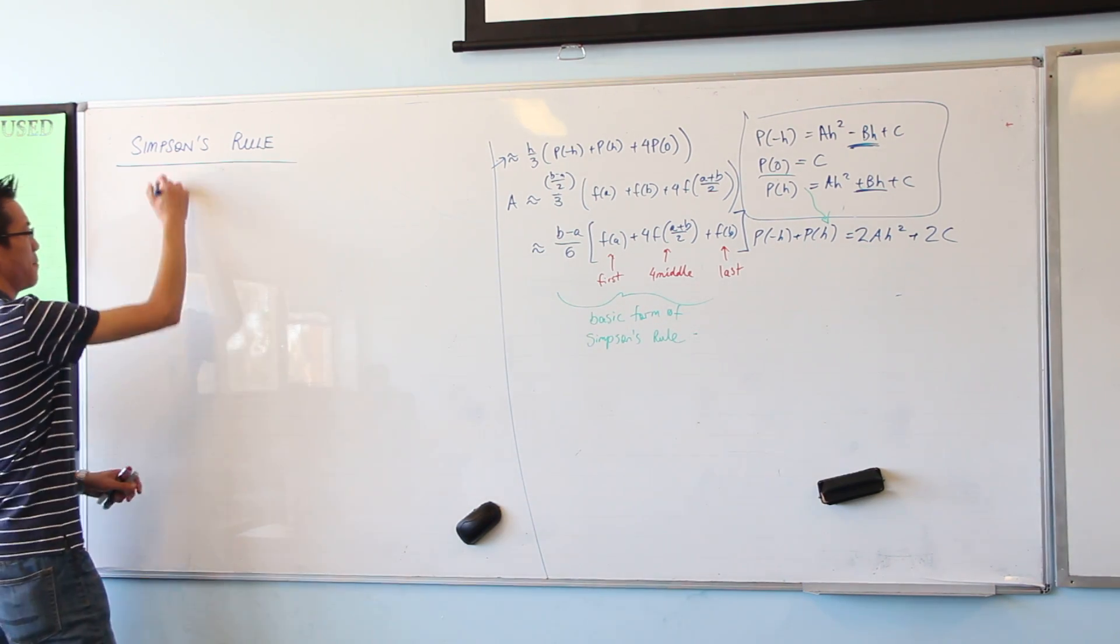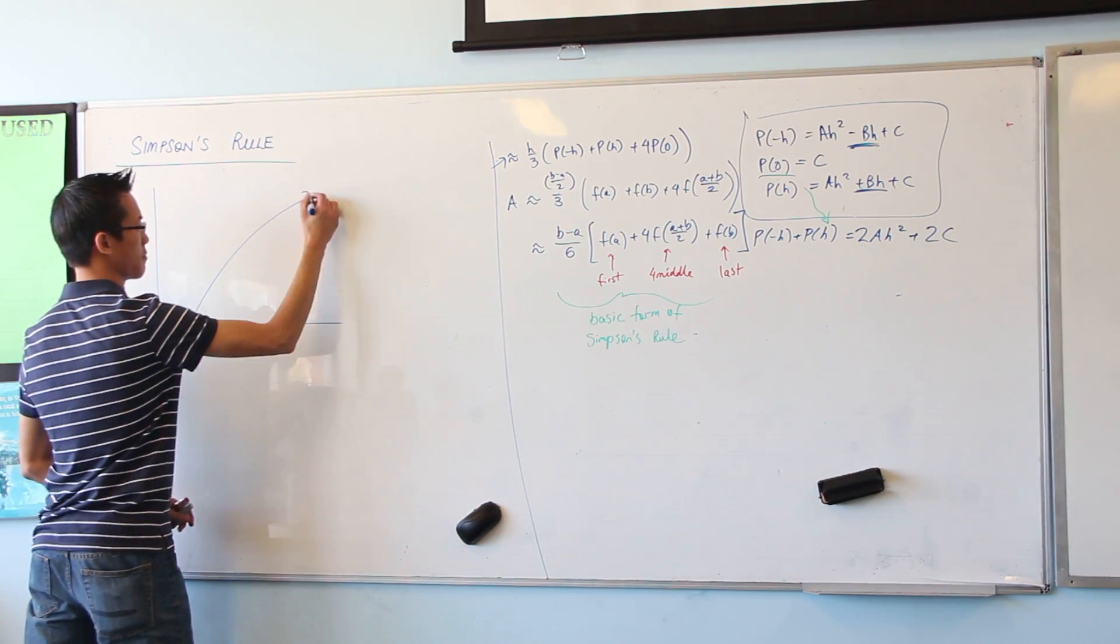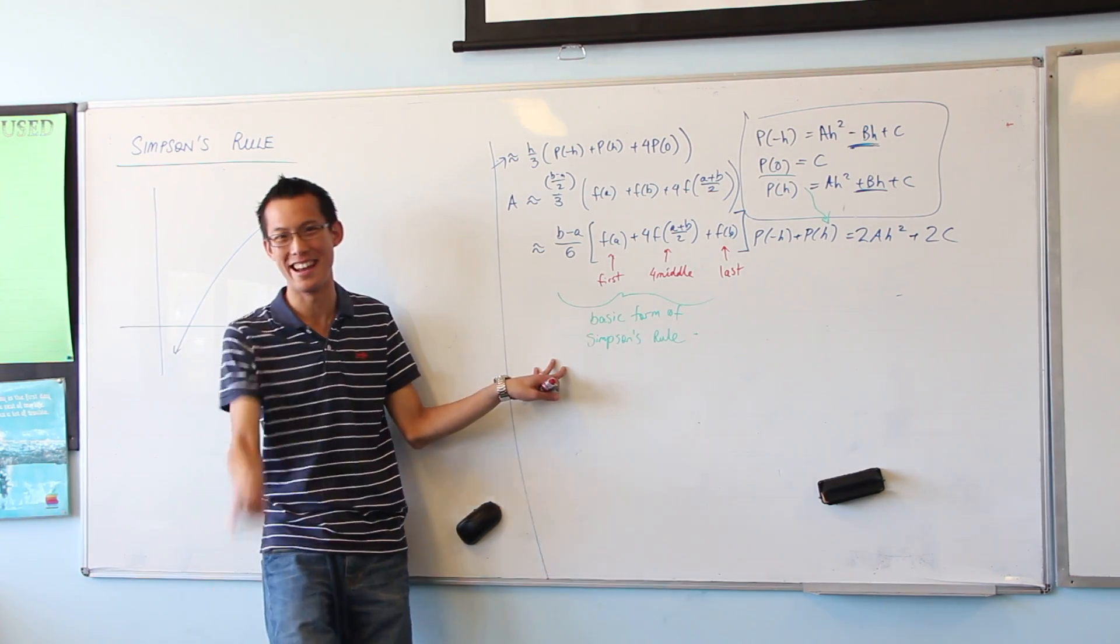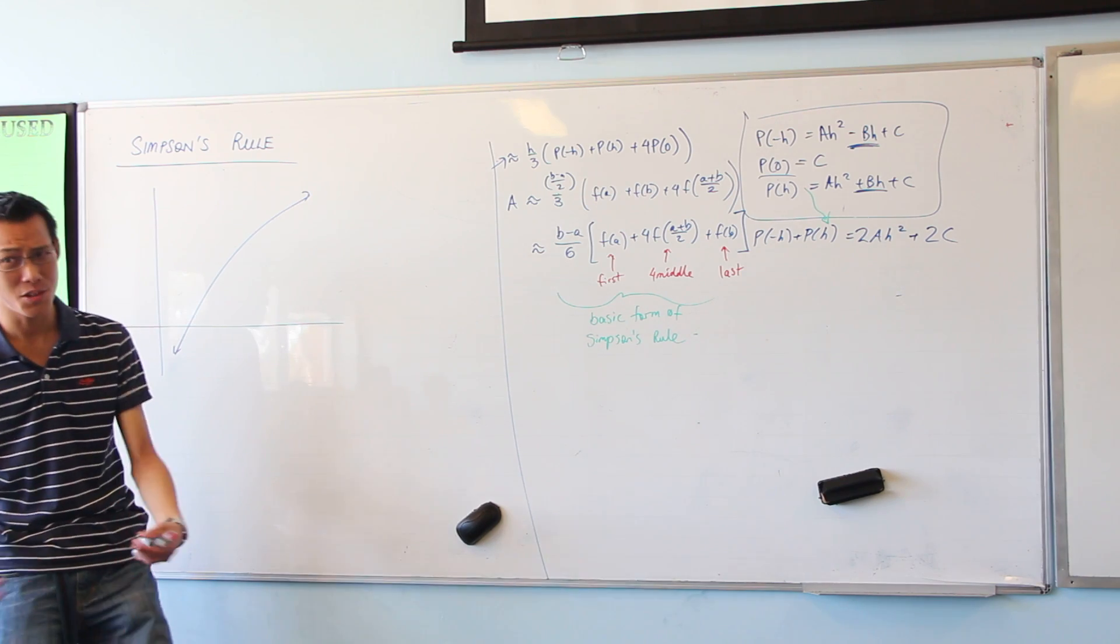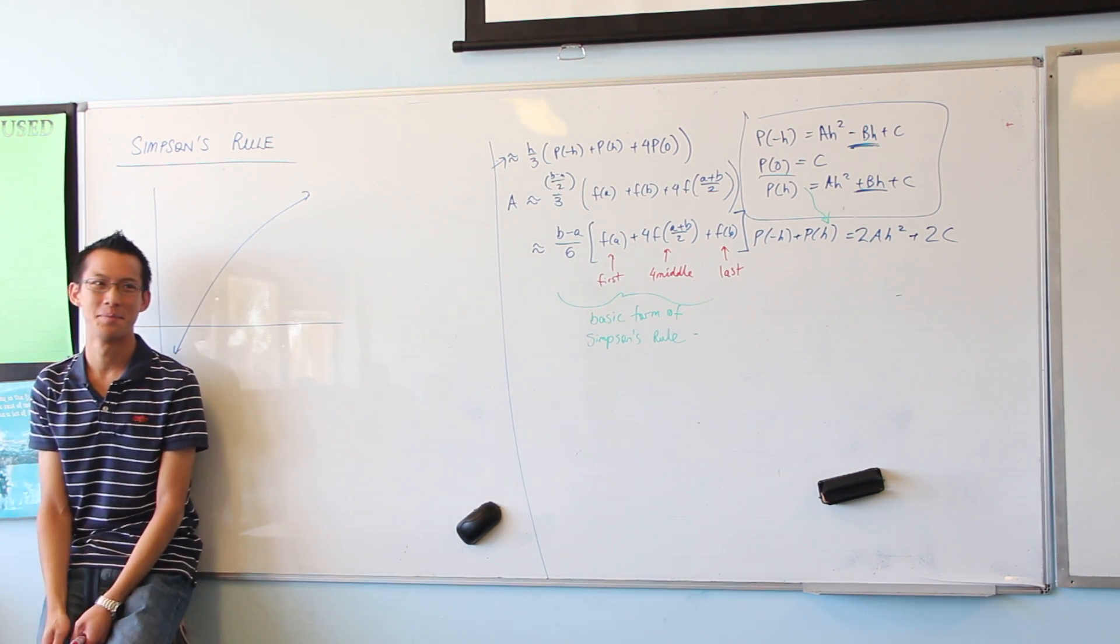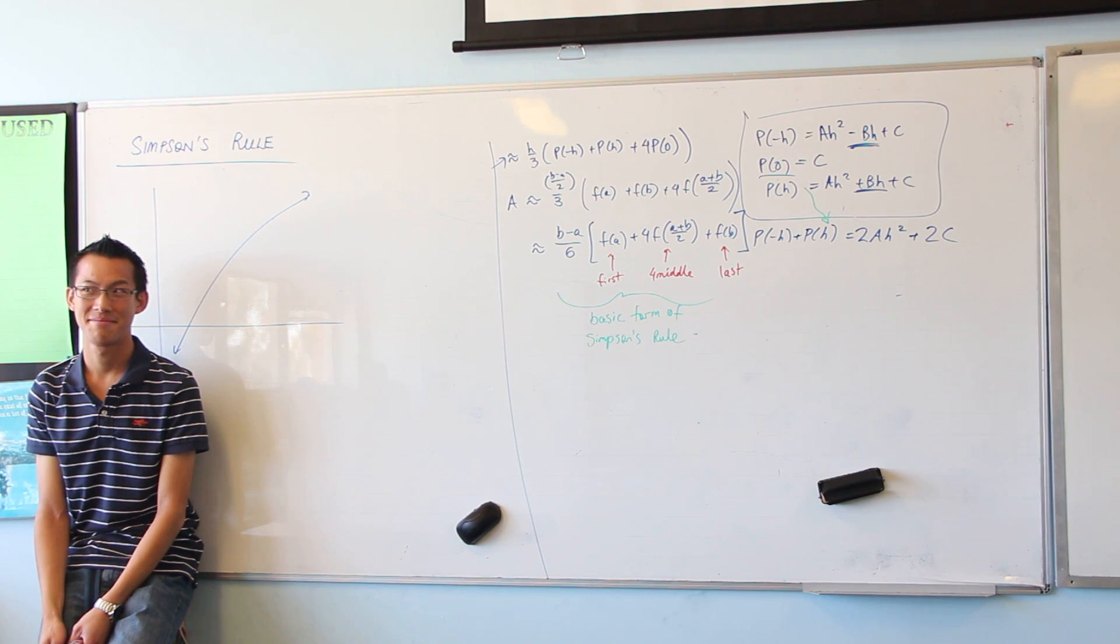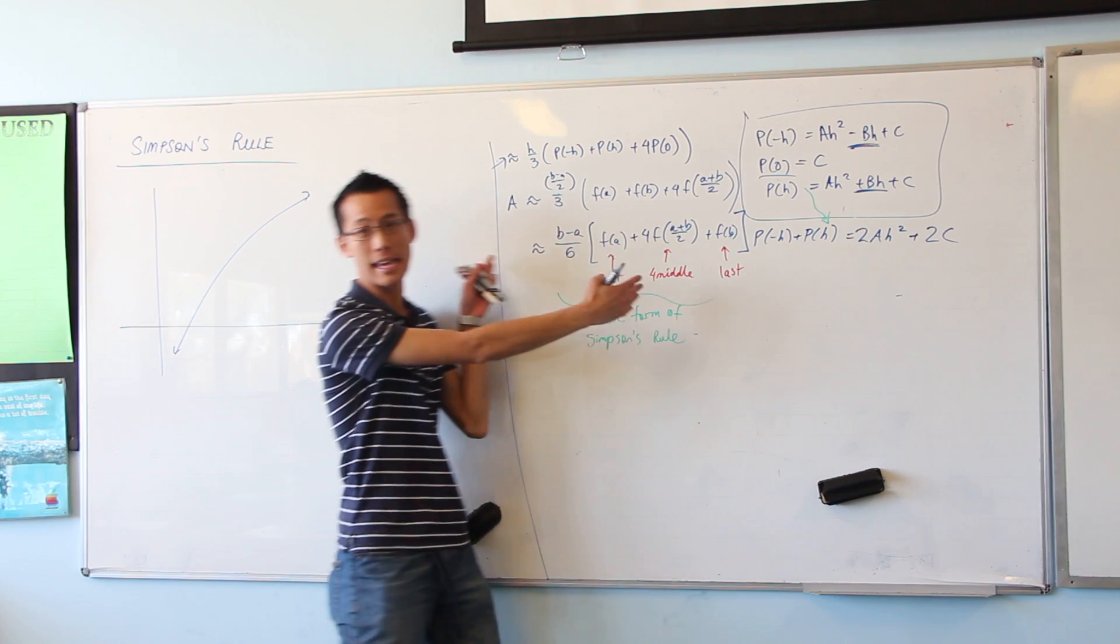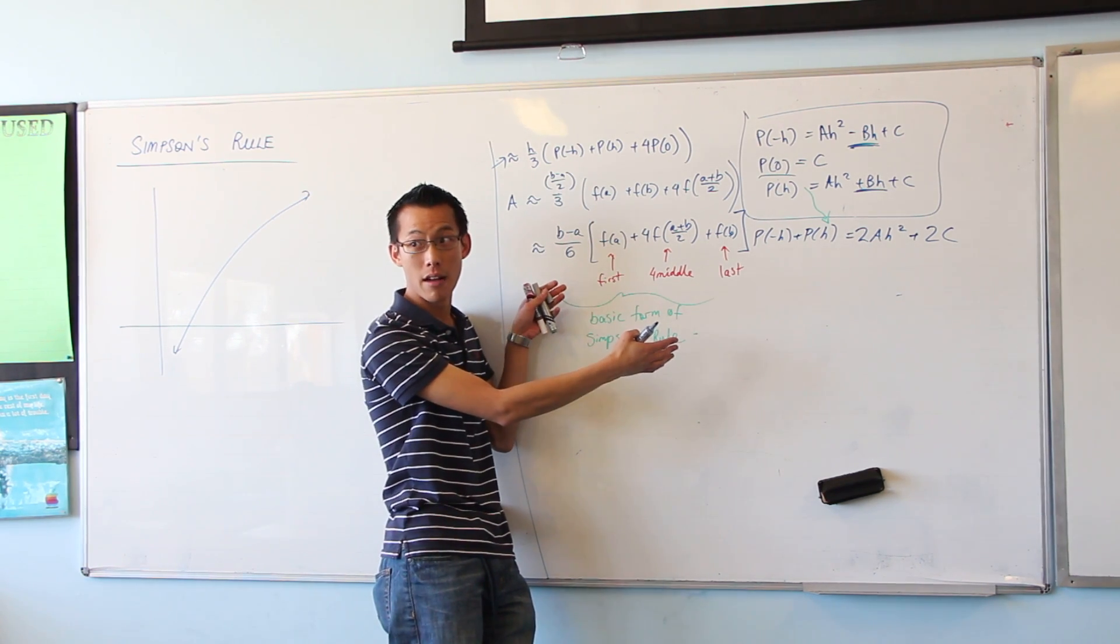Let's draw another quick diagram. Now, remember I said this is a basic form. Now I have to talk faster. This is a basic form, right? What do you think, from what we've been looking at in the past couple days, is the not-basic form? It's the area under a parabola, right?